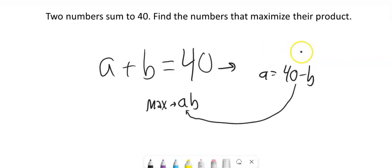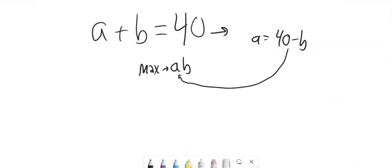And then how about I substitute that into that A spot? So now this thing that I want to maximize, instead of being in two variables, will be in terms of one variable. And that's my product.